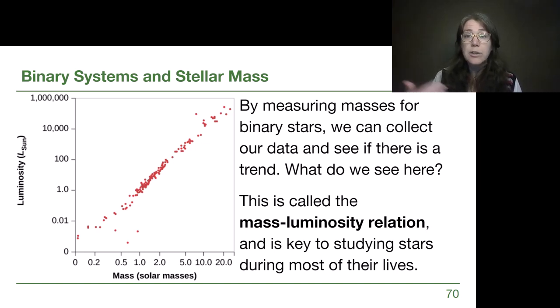So once we have measured a bunch of these binary systems, then we can plot them all on a chart and see if there's a clear trend. And very helpfully for us, for stars with masses and measured luminosities, remember that's the true brightness, so we actually need to know their distances, there is a very clear trend in the data. We could make a line that goes through all but just a few of these points. And this is the mass-luminosity relation.